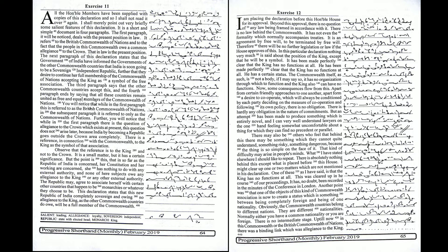The next paragraph of this declaration states that the government of India have informed the governments of the other Commonwealth countries that India is soon going to be a sovereign independent republic, and that they desire to continue her full membership of the Commonwealth of Nations, accepting the king as a symbol of the free association. The third paragraph says that the other Commonwealth countries accept this.